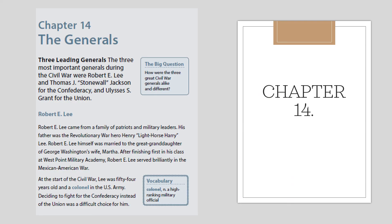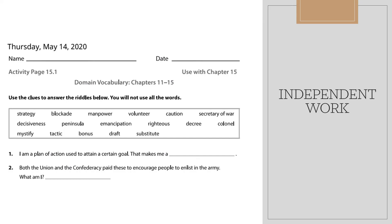Now it's your job to read chapter 14, which is about the generals of the Civil War. Your big question for this chapter is: How were the three great Civil War generals alike, and how are they different? Try to compare and contrast them. After you're done reading chapter 14, you're going to work on some domain vocabulary for chapters 11 through 15. The lowest scoring part of our test seems to be on vocabulary, so make sure you're practicing.